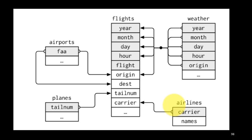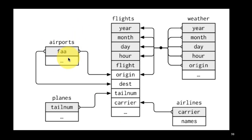Let's take a pictorial view of these various tibbles. The flights tibble has many columns; the important ones shown are year, month, day, hour, flight, origin airport, destination airport, tail number, carrier, and many other columns. The airports tibble contains information about each individual airport — for example, the latitude and longitude. Every airport is identified uniquely by an FAA airport code: for Newark it's EWR, for JFK it's JFK, for LaGuardia it's LGA, and for Atlanta it's ATL. The FAA code is the primary key in the airports tibble.